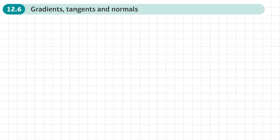This is the sixth section of chapter 12 on differentiation, and this section is on gradients, tangents and normals.